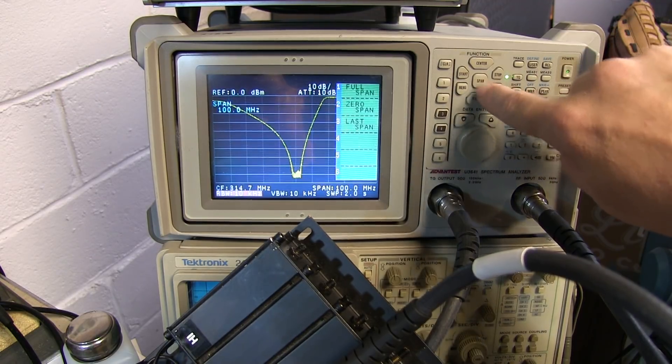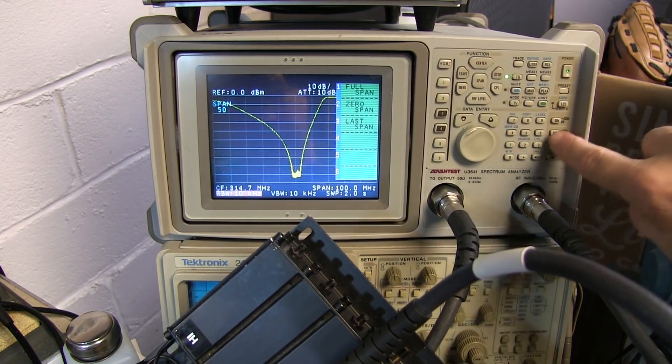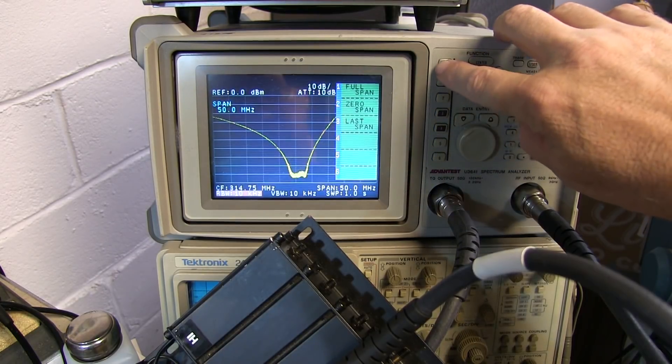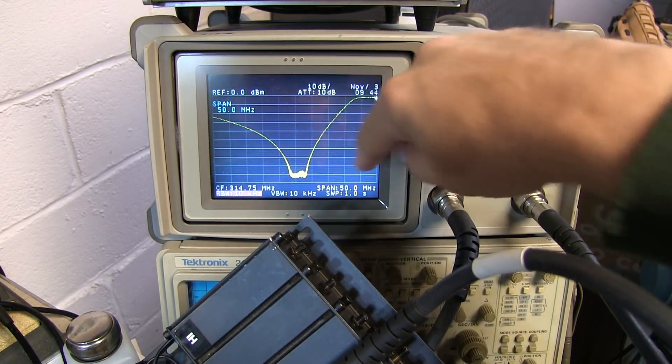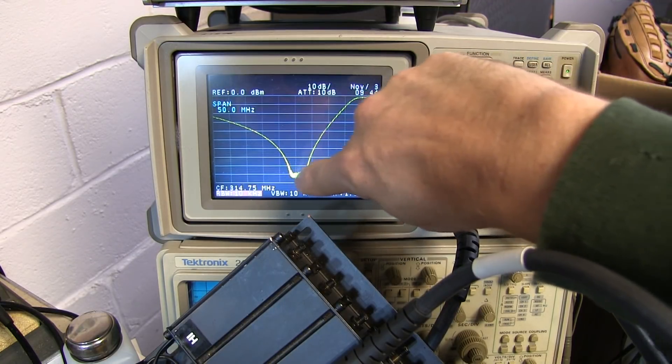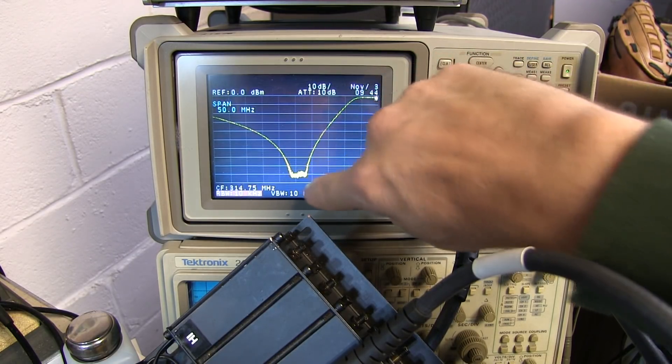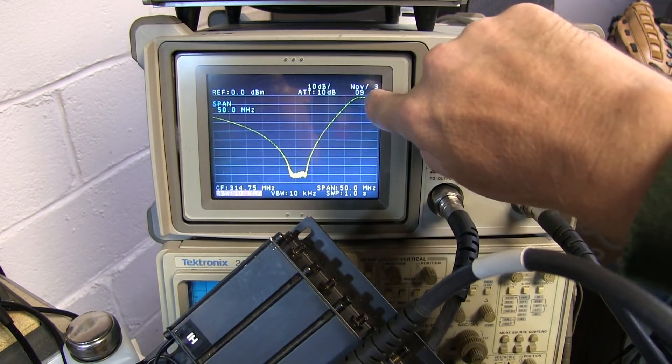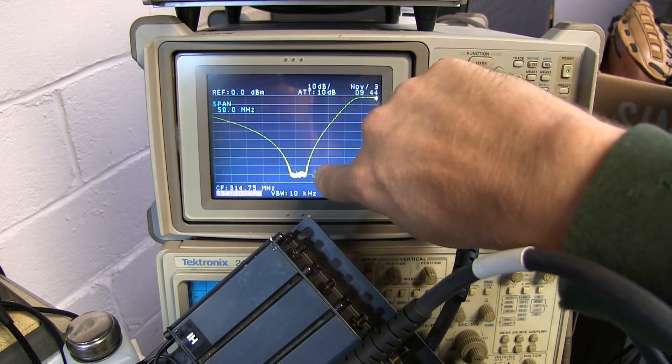And if we reduce the span down to 50 megahertz, I don't have to sweep quite as far. Now I get a little bit faster sweep, it's still taking about a second to do the full sweep, but now I can see that noise has been dropped down quite a bit. Compared to the passband characteristic up here, I'm down about 90 dB.